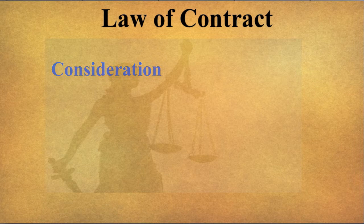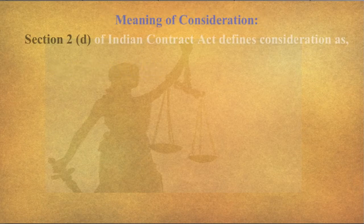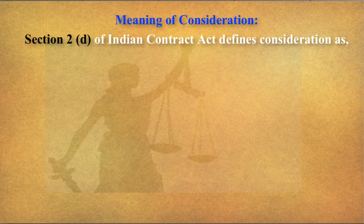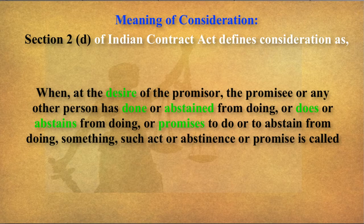Let's check out the technical definition. Section 2(d) of the Indian Contract Act defines consideration as: when at the desire of the promisor, the promisee or any other person has done or abstained from doing, or does or abstains from doing, or promises to do or to abstain from doing something, such act or abstinence or promise is called a consideration for the promise.